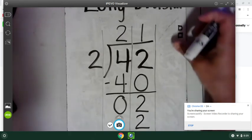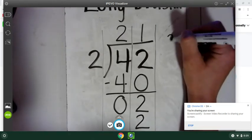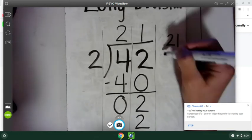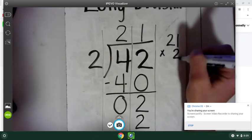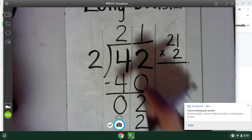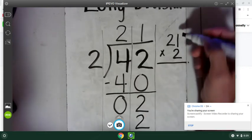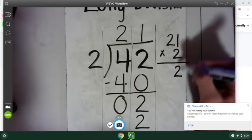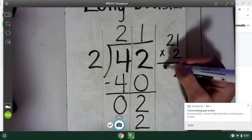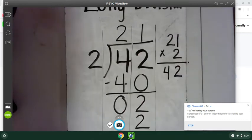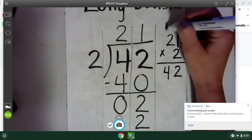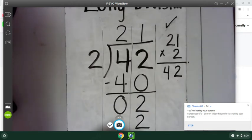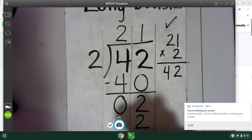Now I can check that. Is that true? If I have 21 groups of two, do I get 42? Well, two times one is two. Two times two is four. I sure do. So that answer would check. So that's the beginning part of long division.